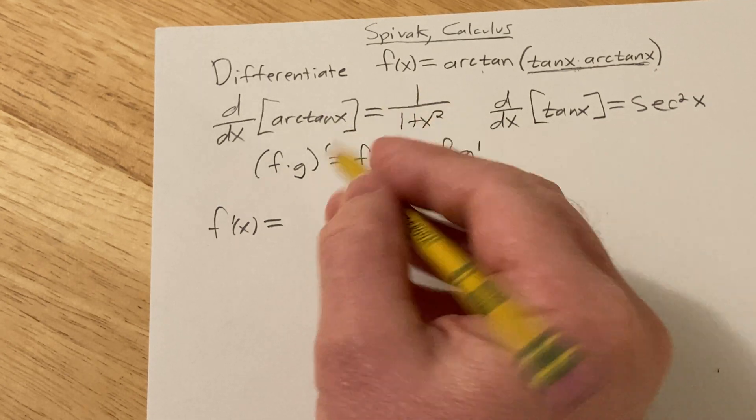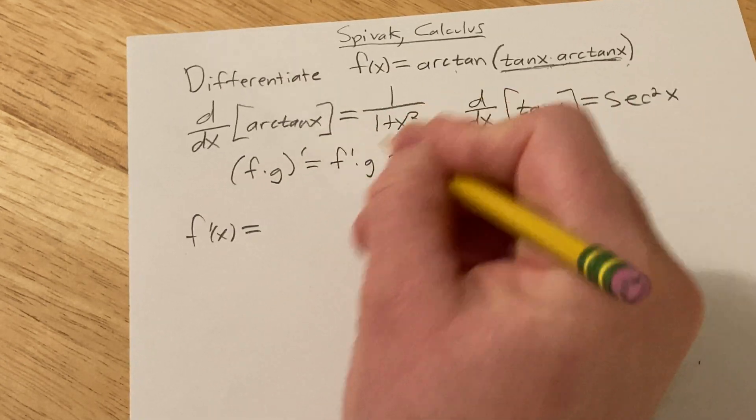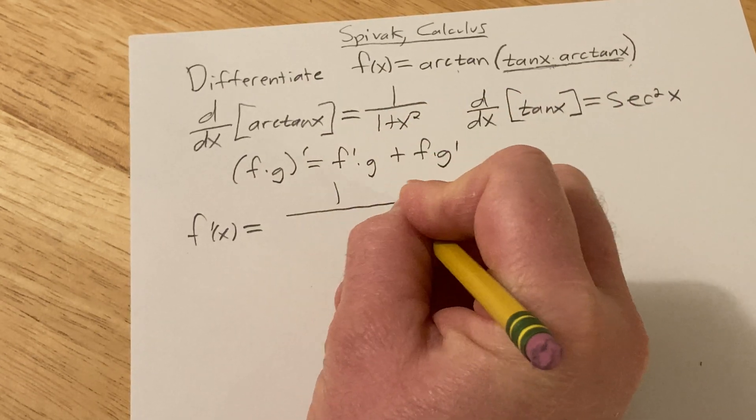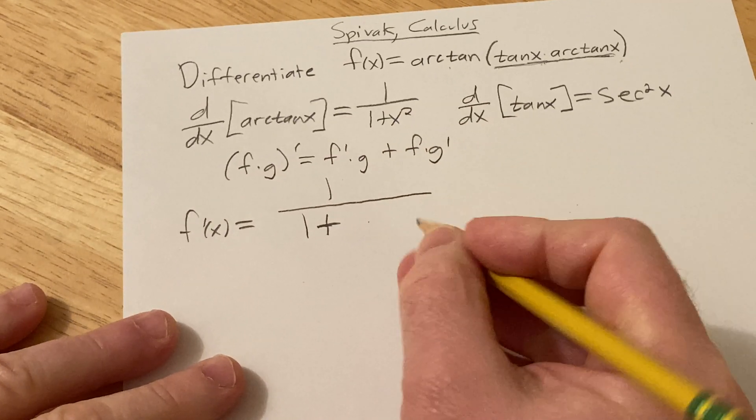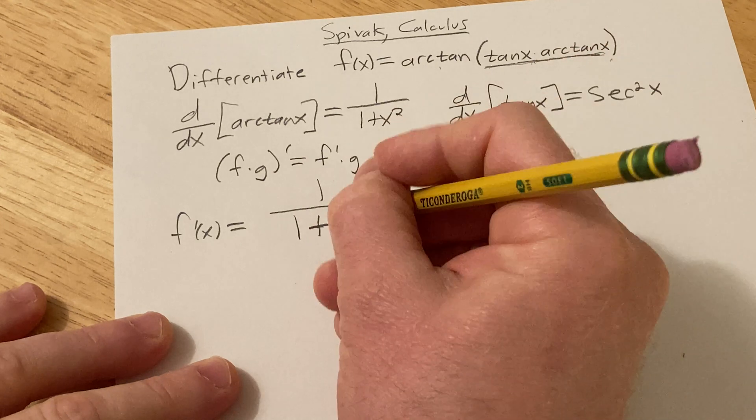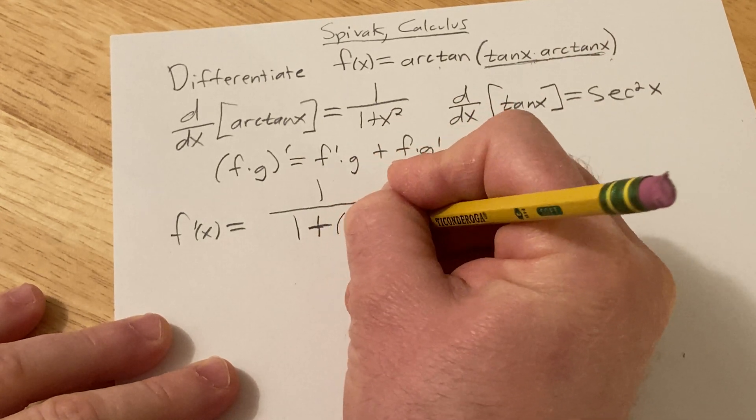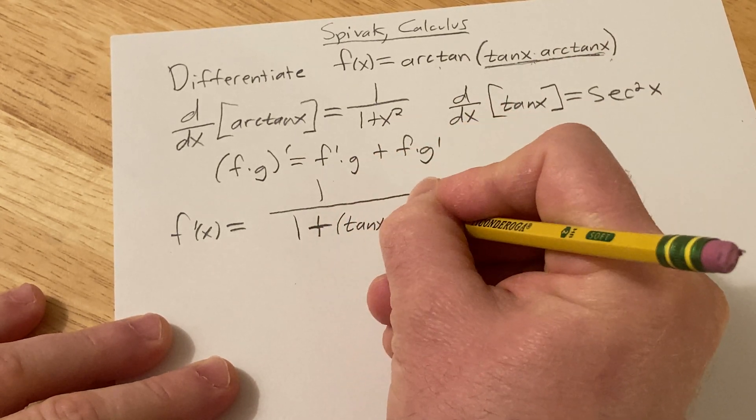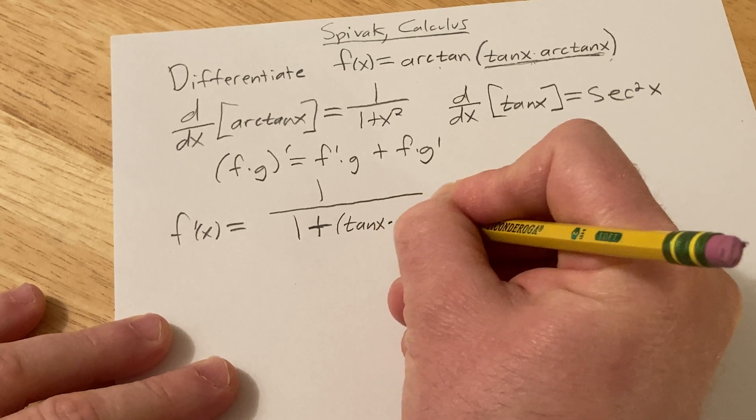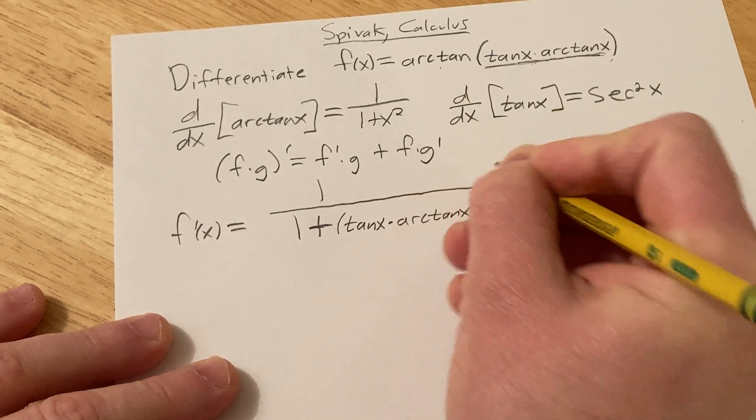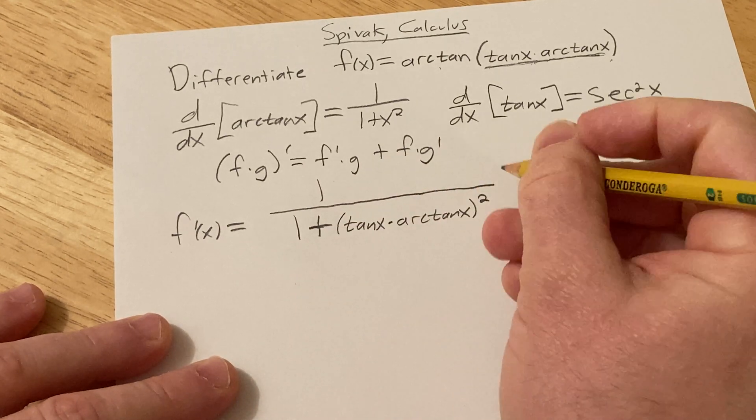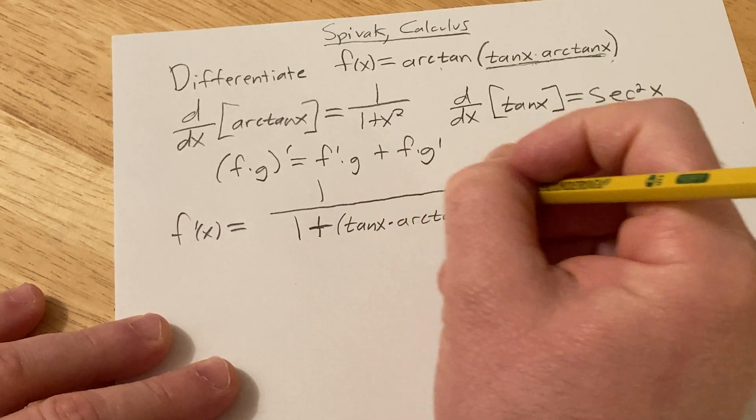So basically, we just apply this formula. So the derivative of arctan is this. So it's 1 over 1 plus, and instead of x here, it's going to be this here. So it'll be parentheses tangent of x times arctan of x quantity squared. Okay, that's the inside. And then times the derivative of the inside.